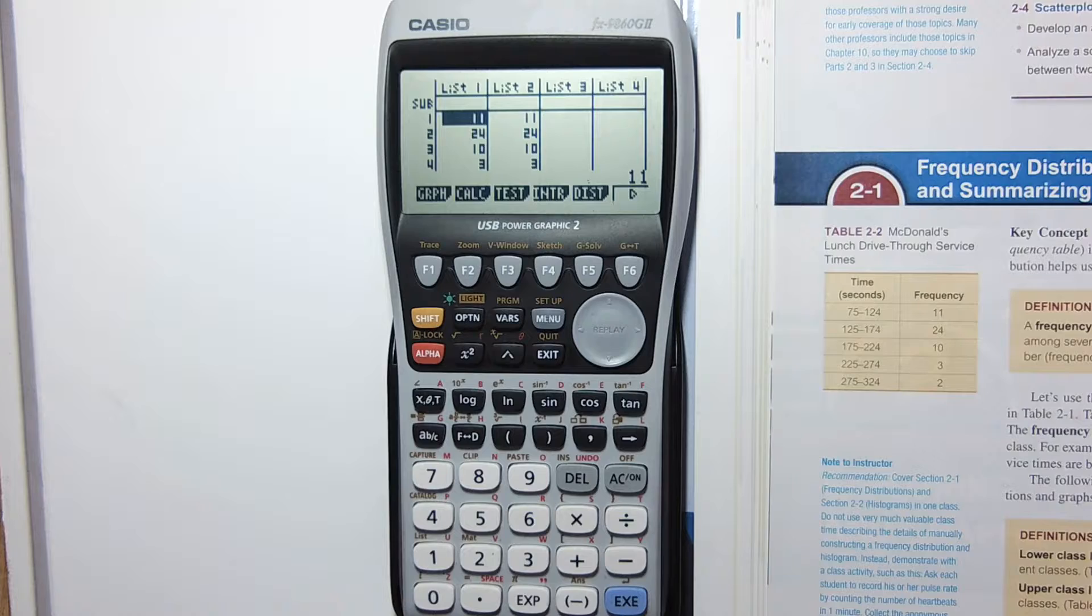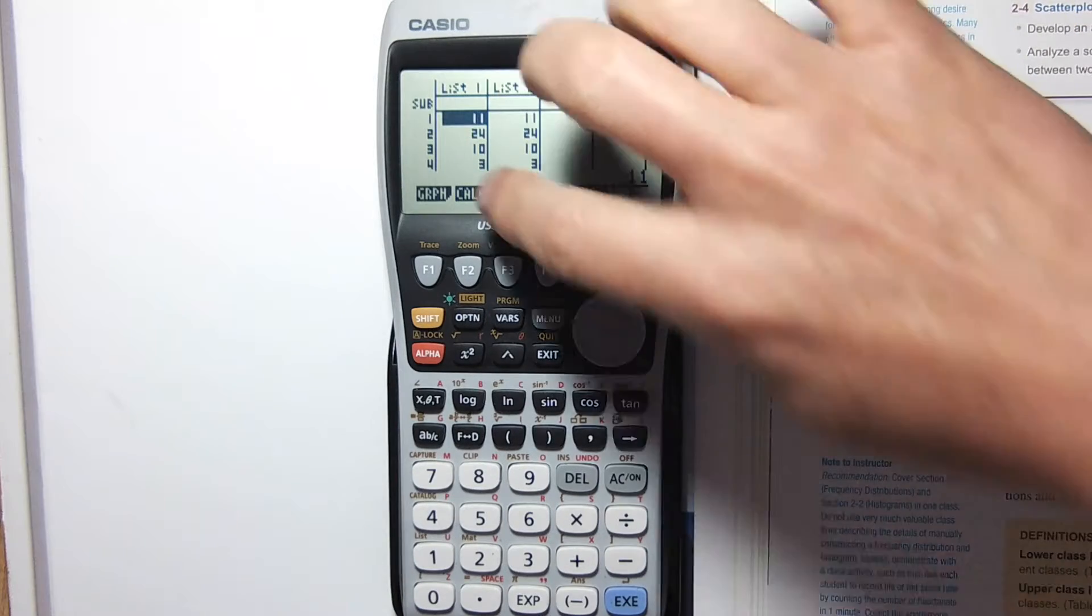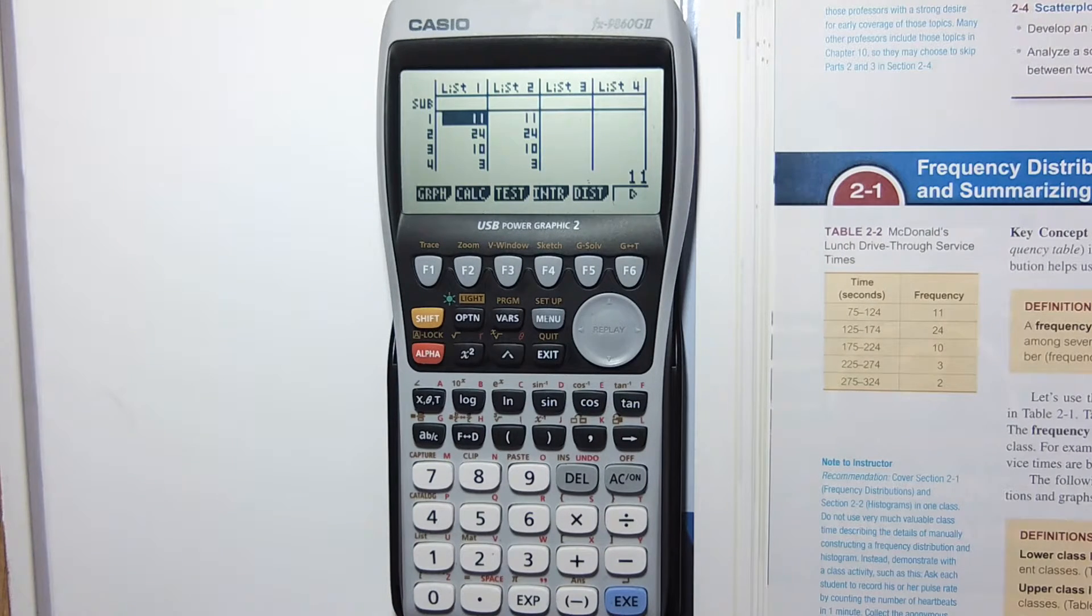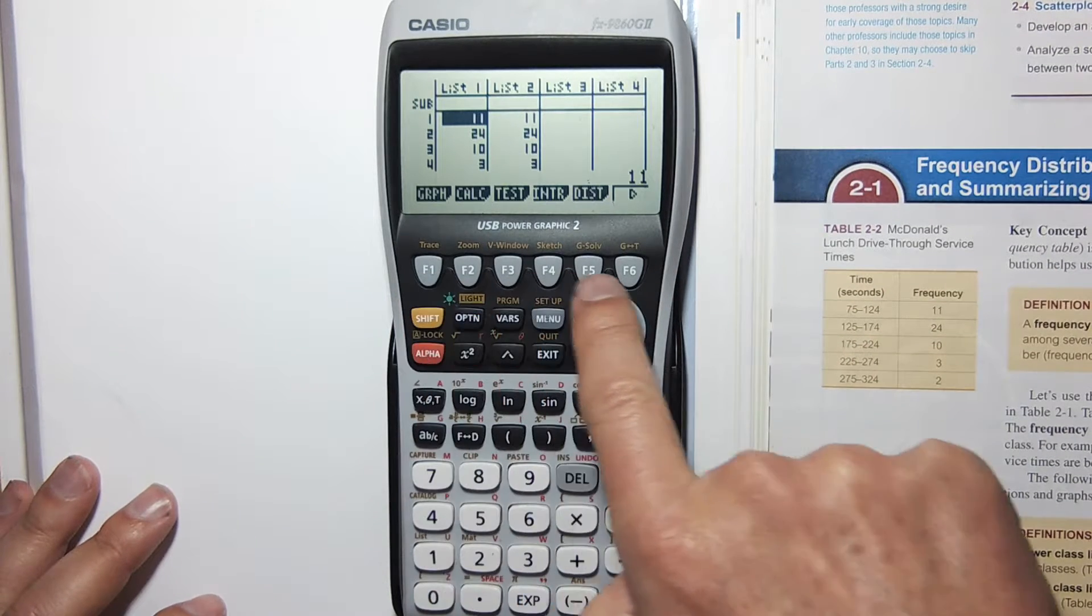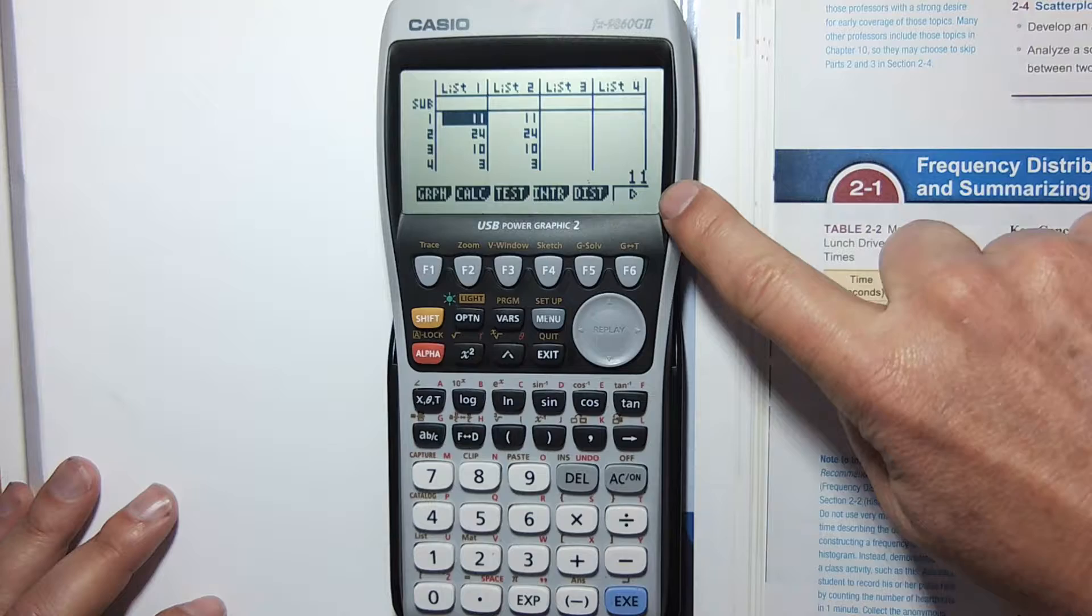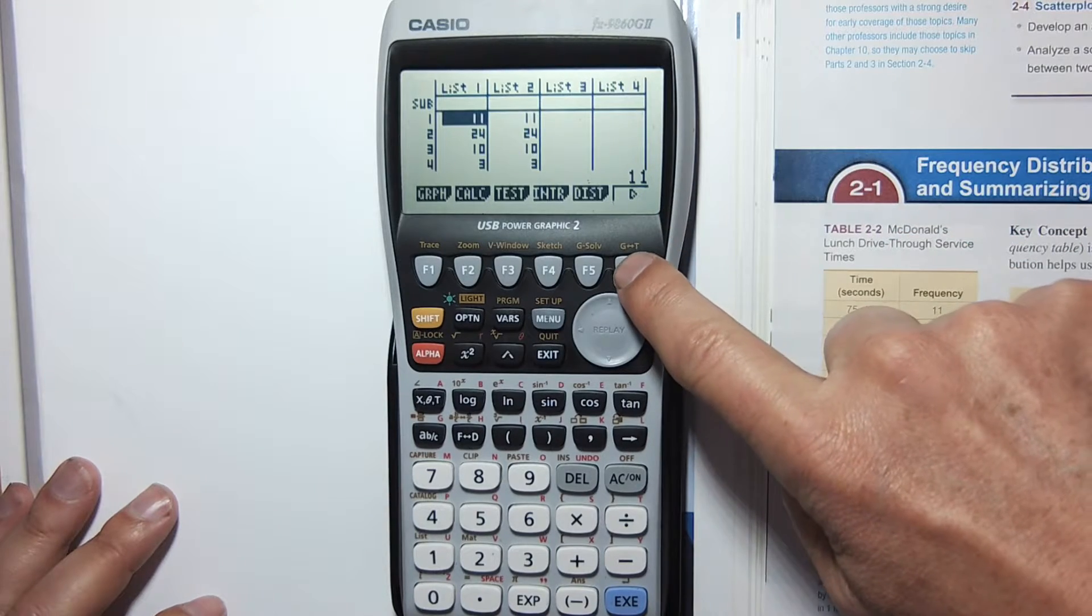I'm now going to show you how to arrange a list by arranging list 1 from the smallest to the biggest number. That's called ascending order. To do that, I have to use these function buttons that control the menu items up here. I need more options, F6, and now I'm going to use the tool.